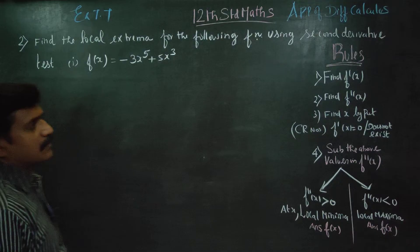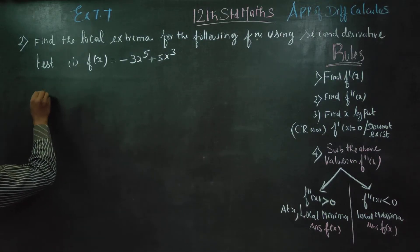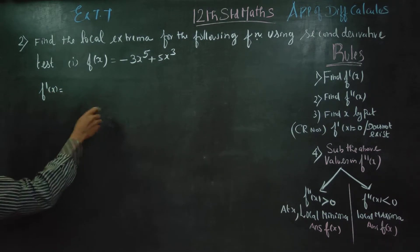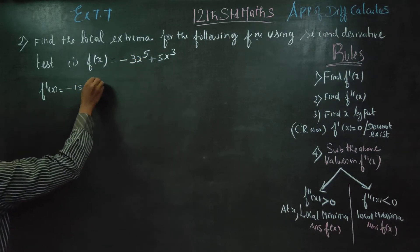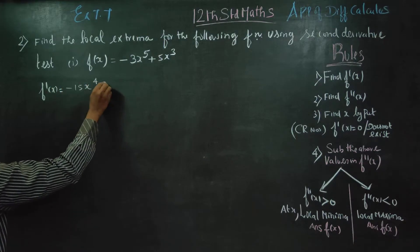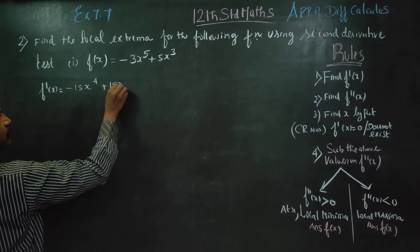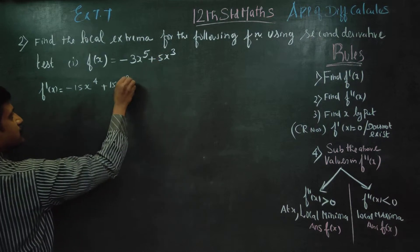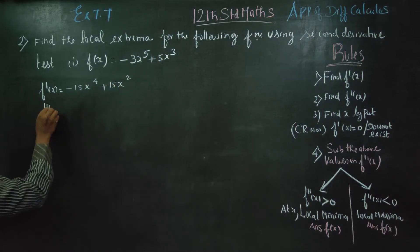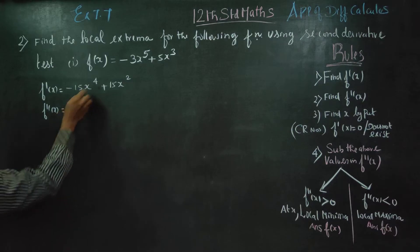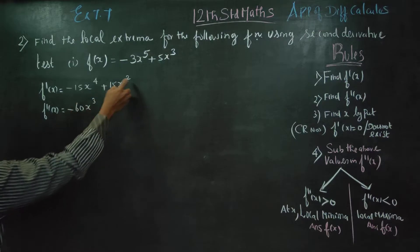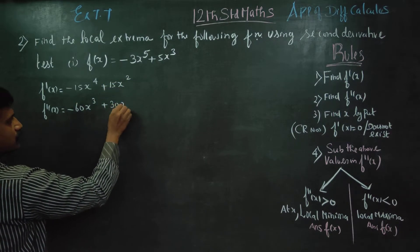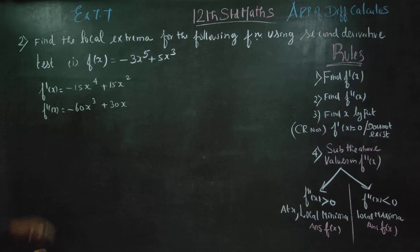In the first step, I will find f'(x). First differentiation gives us: f'(x) = -15x⁴ + 15x². Then f''(x) = -60x³ + 30x. This is my f'(x) and this is my f''(x).